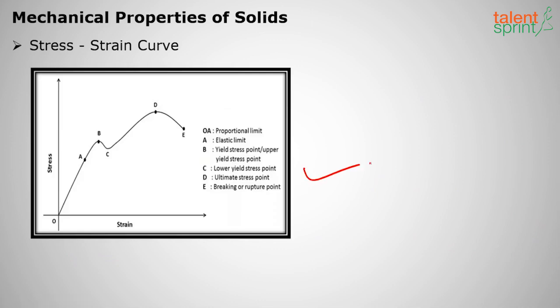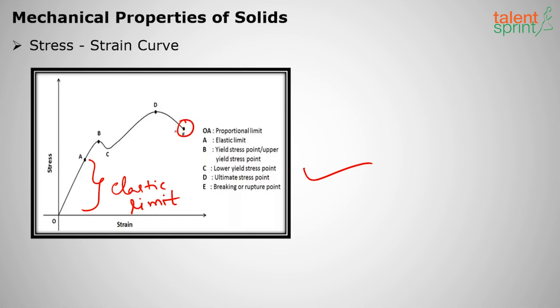The stress-strain curve was given by Robert Hooke. Within the elastic limit, the line passes through the origin at 45 degrees slope. OA represents the proportionality limit where stress is directly proportional to strain. Point E is the breaking point — if stressed beyond this, the body may break into pieces. This covers the key concepts of mechanical properties of solids; we shall meet in the next sessions. Thank you.